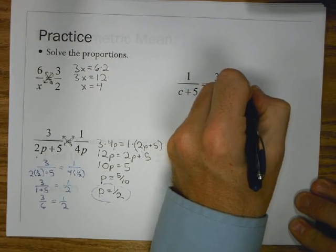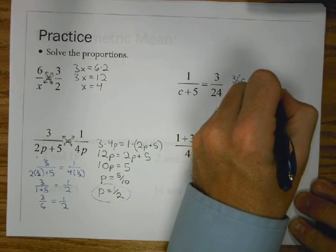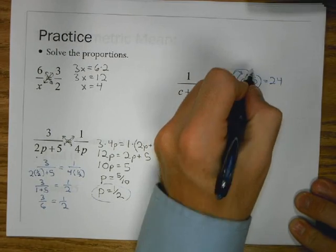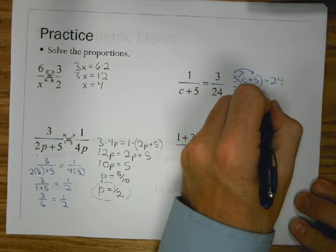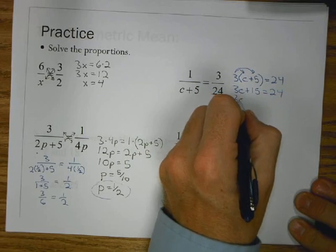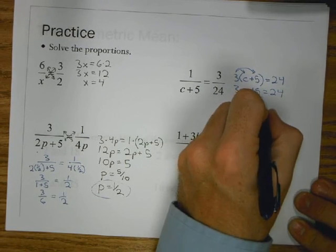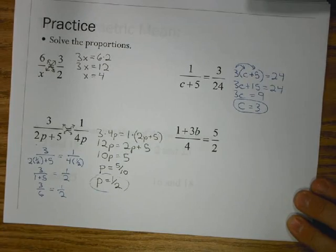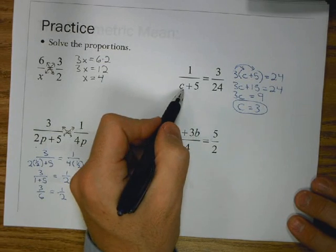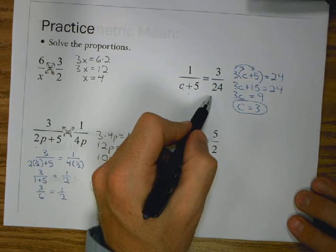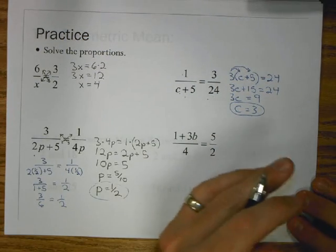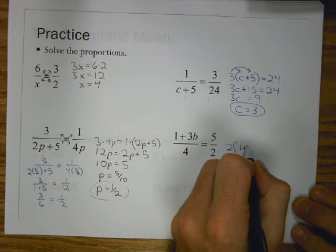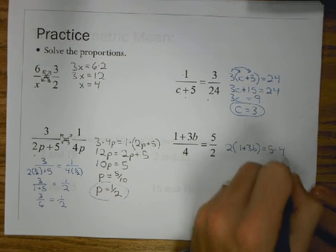I have 1 over C plus 5 equals 3 over 24. So, I'm going to multiply 3 times C plus 5, and that's equal to 24 times 1. Whenever I have to distribute, make sure you multiply both terms, 3 times C and 3 times 5. So, I get 3C plus 15 equals 24. I subtract 15 from both sides, I have 9 left over. So, 3C equals 9. And I get C equals 3.